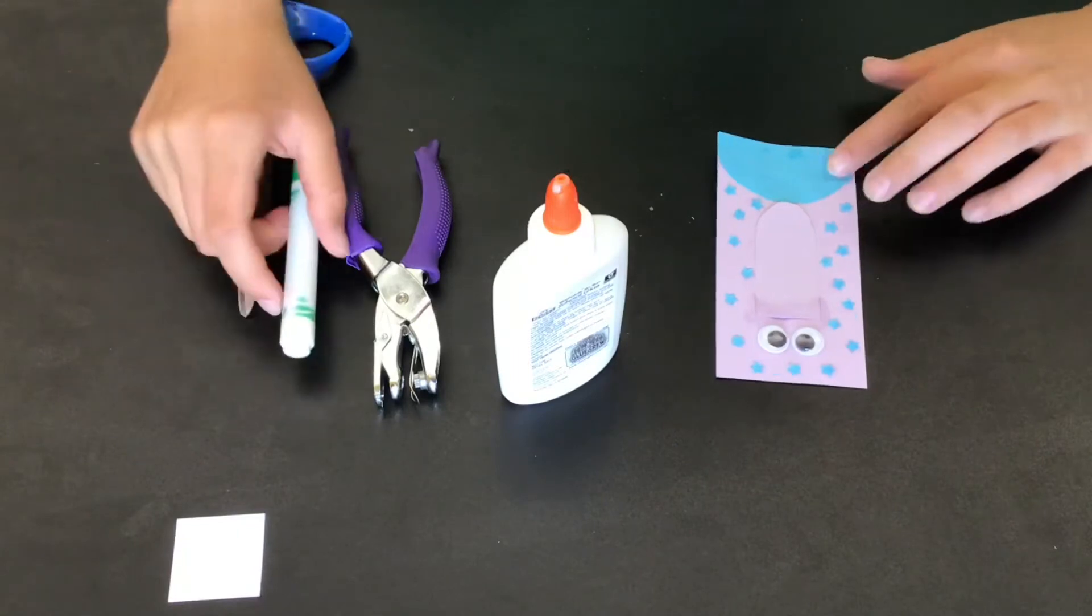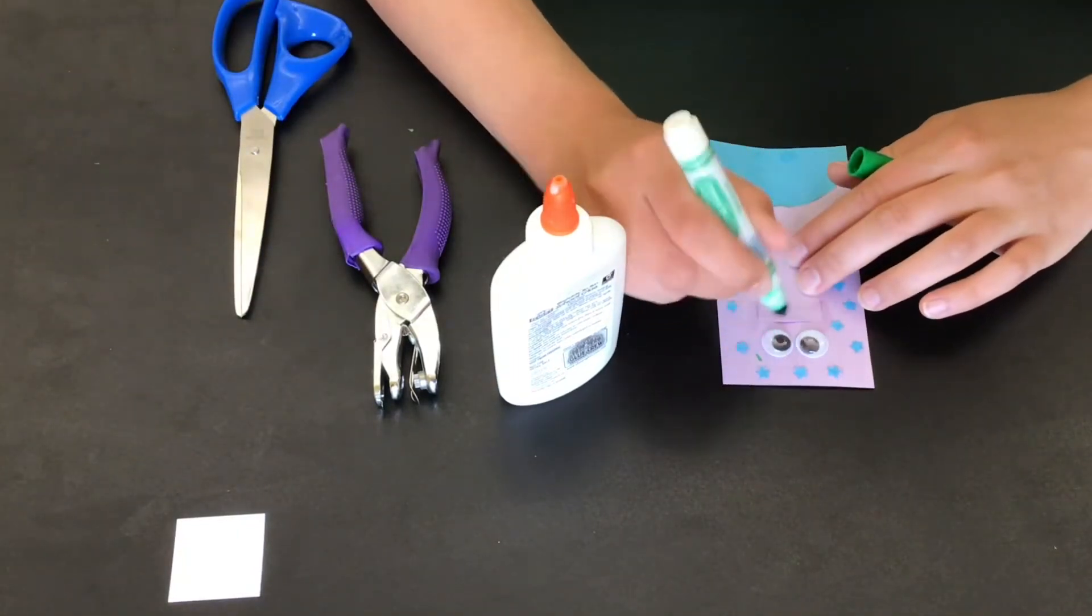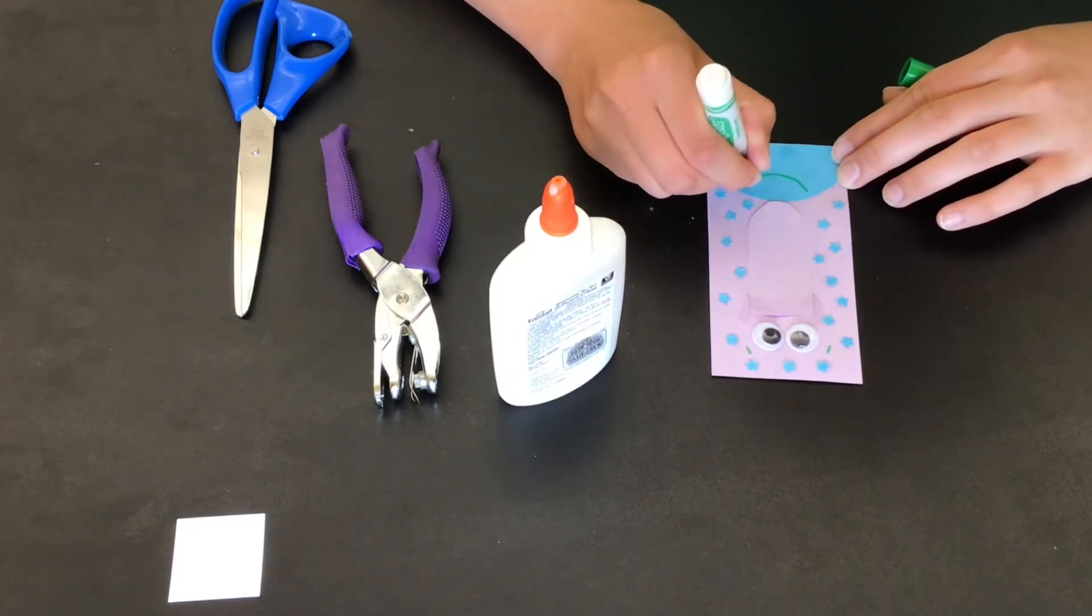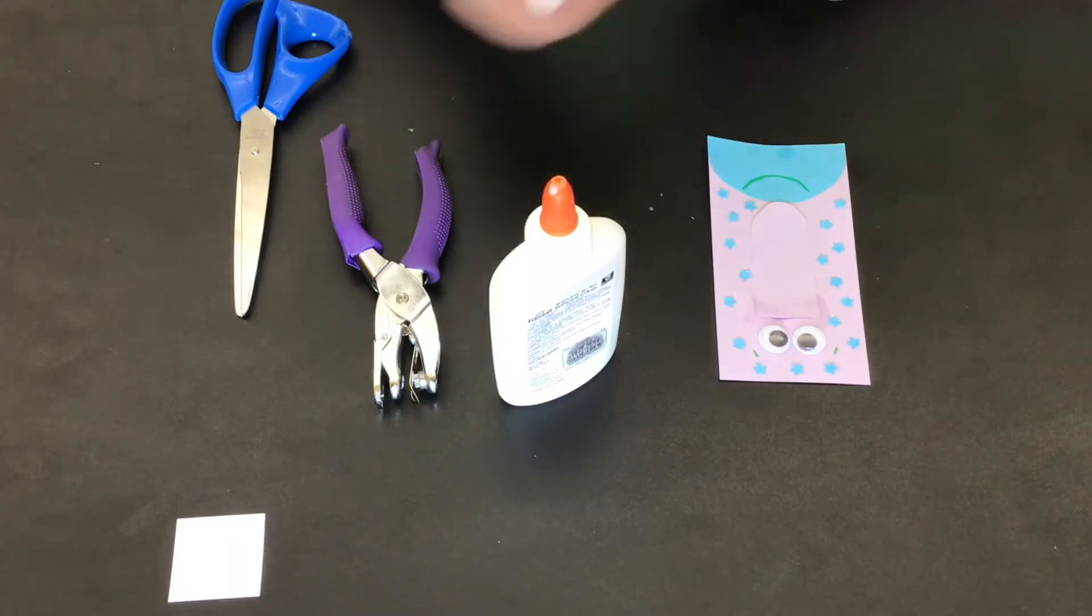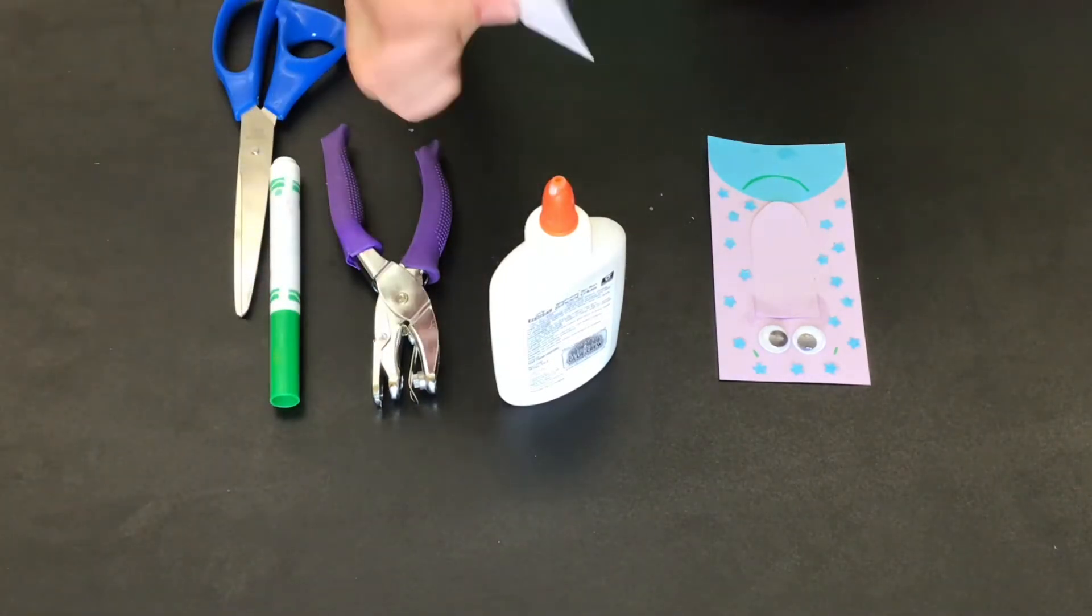Now that you have your polka dots glued on, or your stripes or your belly, whatever, you're going to take your marker and put on some eyebrows and a smile. You can draw anything else you want on here, but I'm just going to do surprised eyebrows and a nice smile. You can make him have whatever kind of face you want.